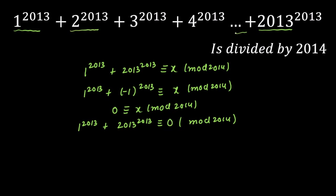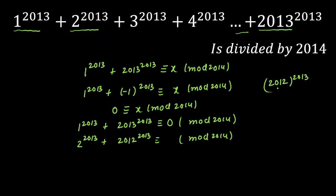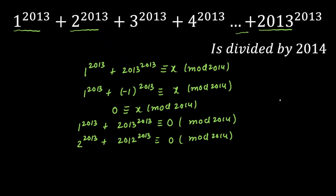Similarly, take the second and second-last terms: 2^2013 + 2012^2013. Since 2012 ≡ -2 (mod 2014), we can write 2012^2013 as (-2)^2013 = -(2^2013) because the power is odd. So 2^2013 + 2012^2013 ≡ 0 (mod 2014). The same pattern holds for the 3rd and 3rd-last terms: 3^2013 + 2011^2013 ≡ 0 (mod 2014), and this continues for every such pair.